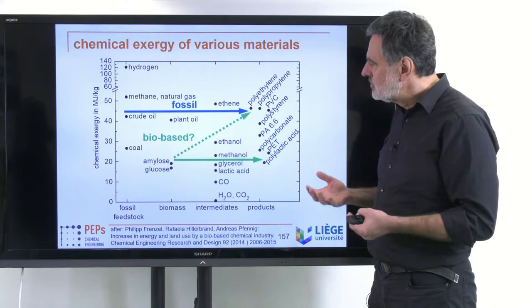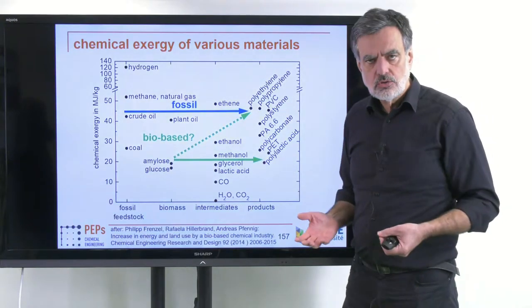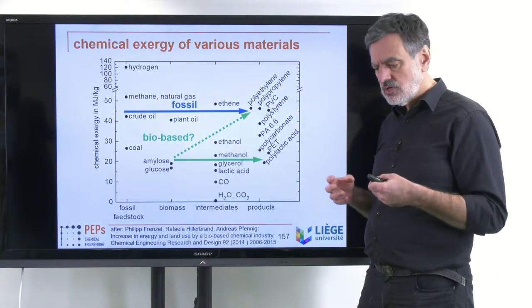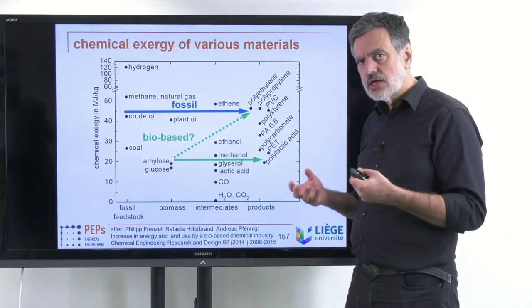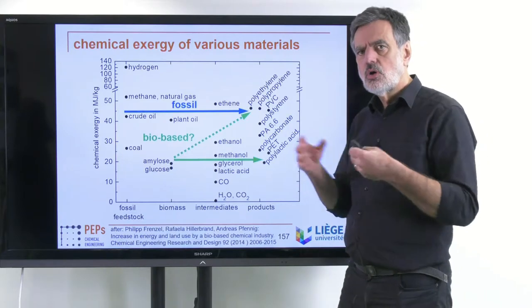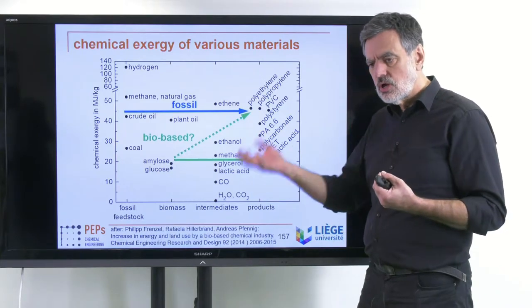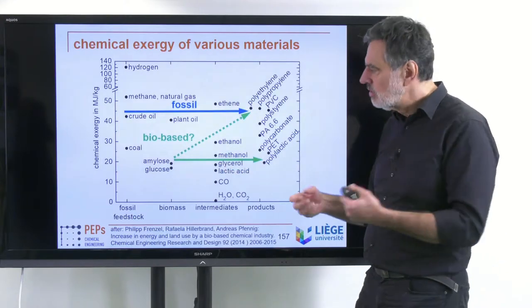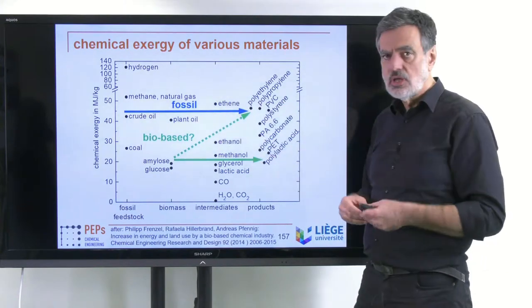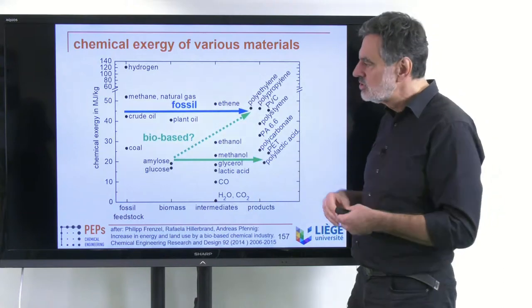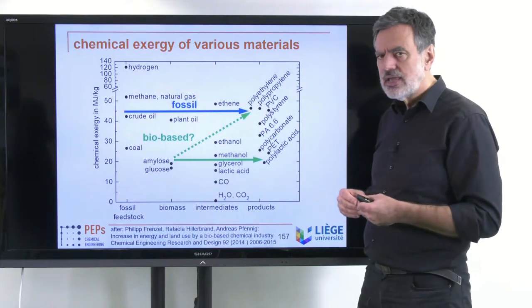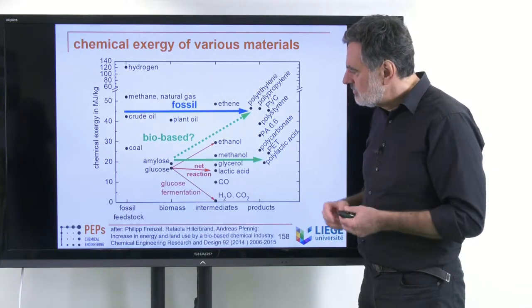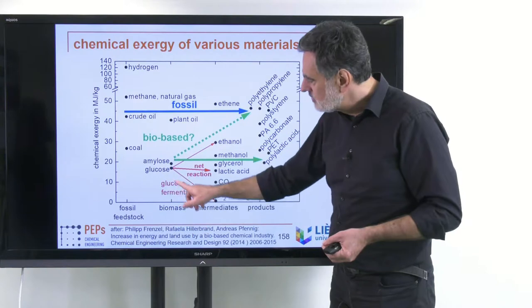How can we put that energy into the system? One has to observe that the free energy of reaction is the overall free energy — all products and reactants accounted for. So the net change in free energy, which at ambient conditions equals the change in chemical exergy, is what matters. To give an example: in glucose fermentation, you start with glucose, produce ethanol and CO2 at equal mass ratio.